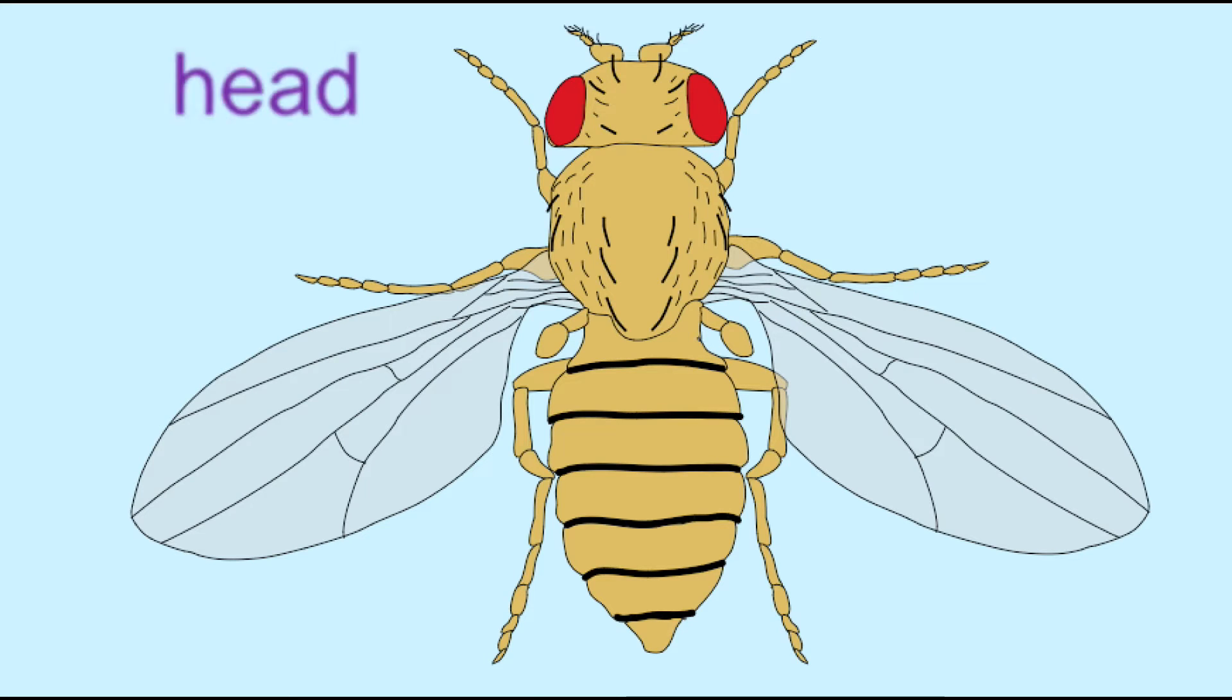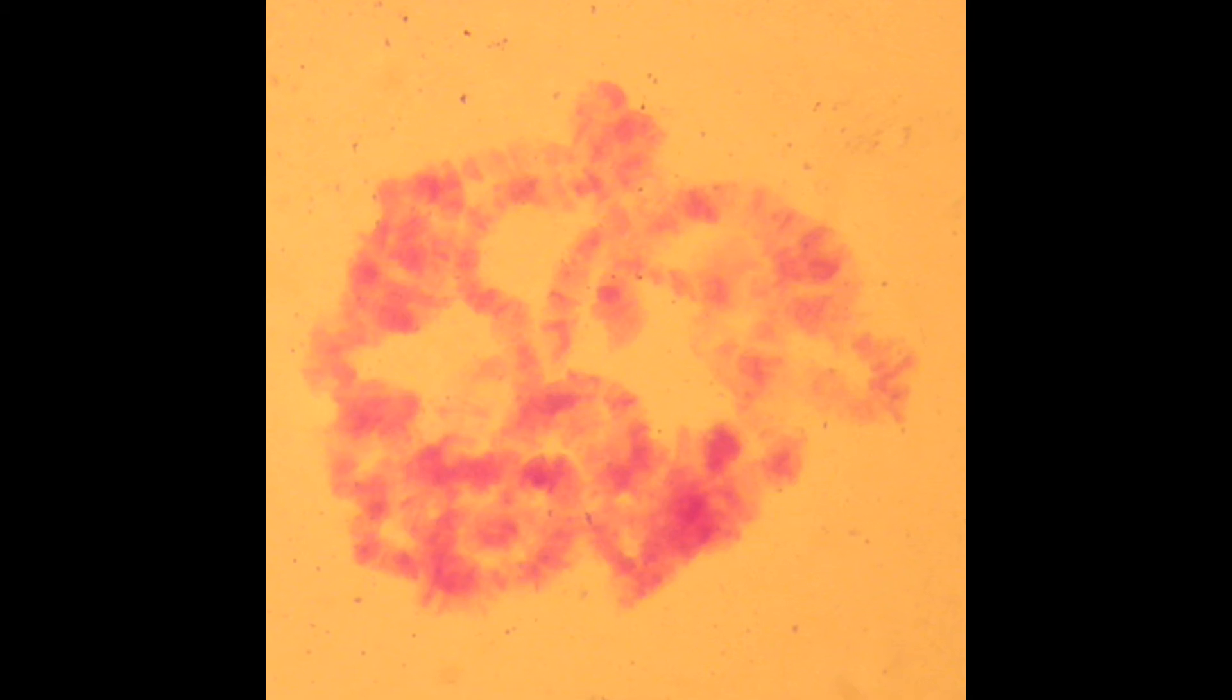In some organisms, such as fruit flies, the duplicated chromosomes remain physically attached to each other, resulting in giant polytene chromosomes, which are actually multiple copies of the same chromosome which are fused.